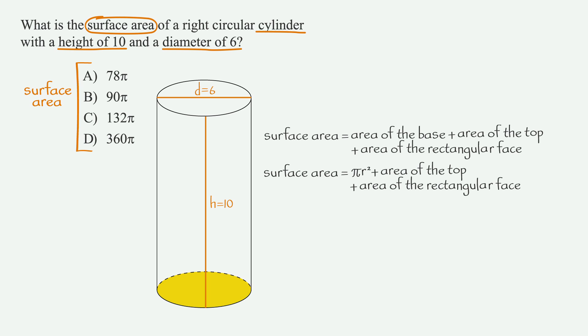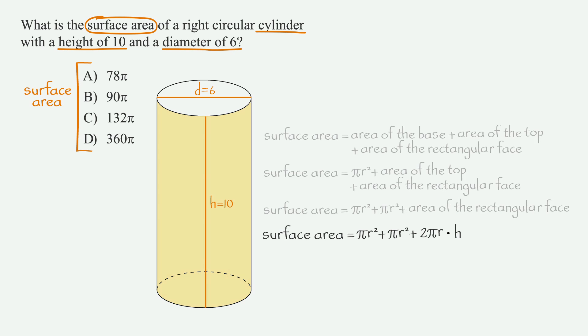The area of the base is pi r squared, and the area of the top is also pi r squared. And as we learned earlier in the lesson, the area of the rectangular face is 2 pi r times the height. Look at that. We have our formula.